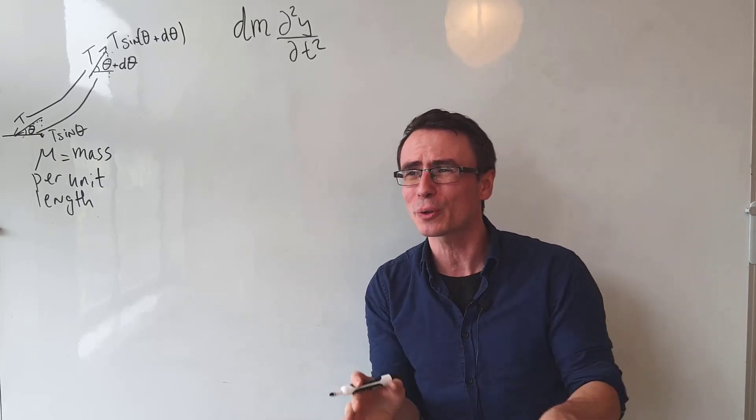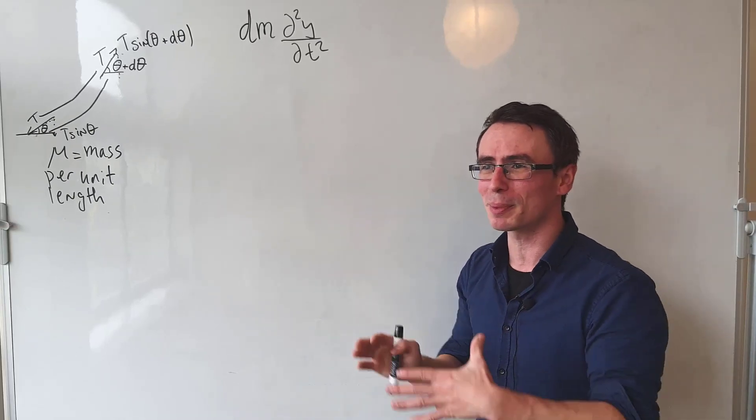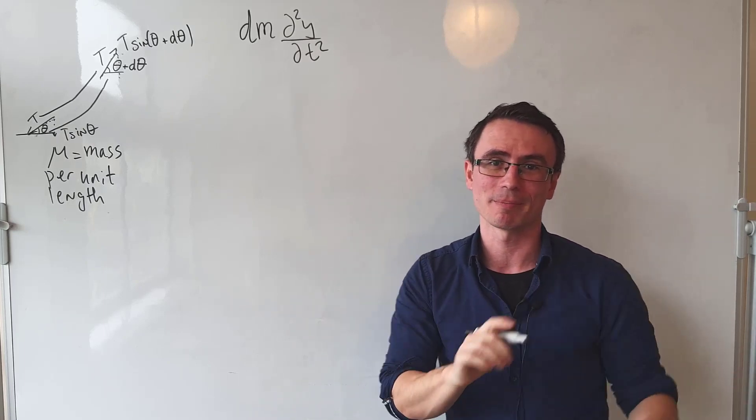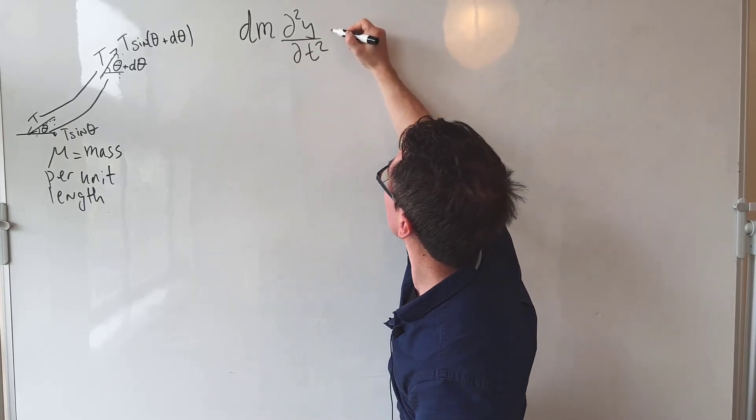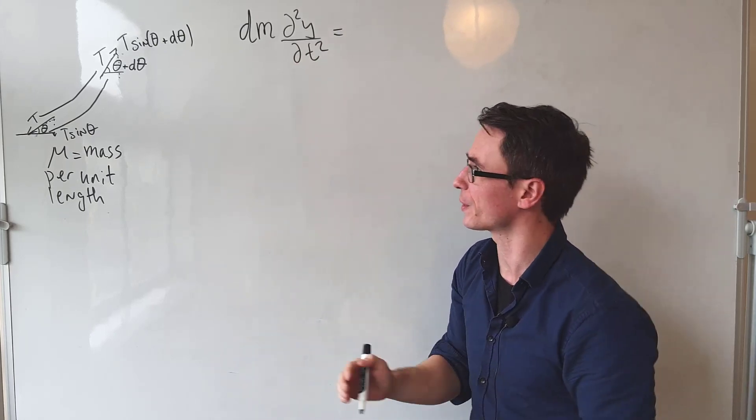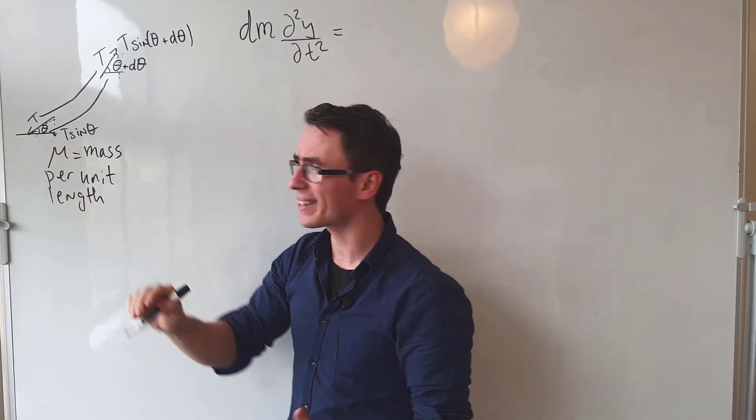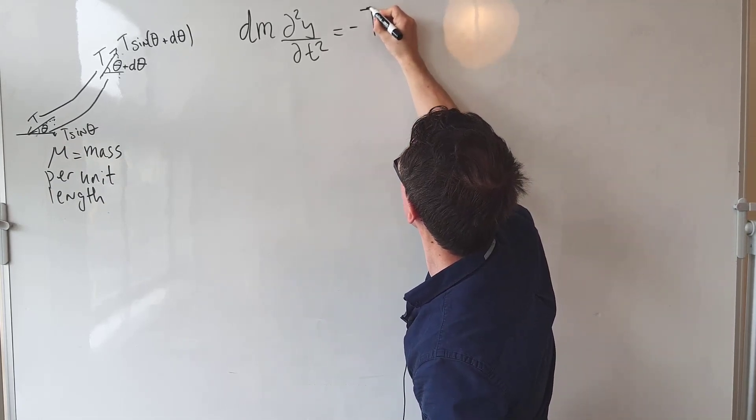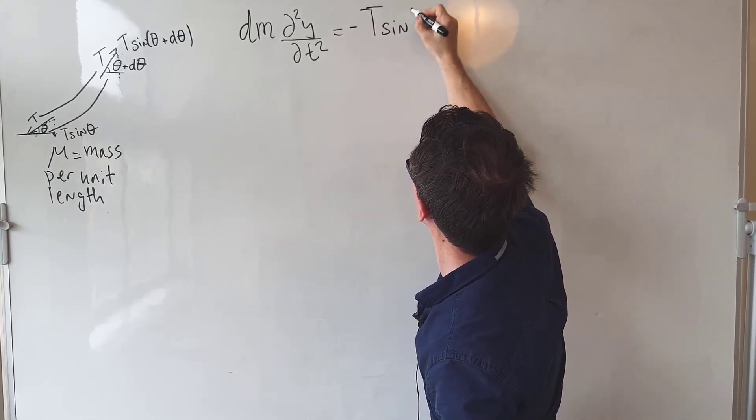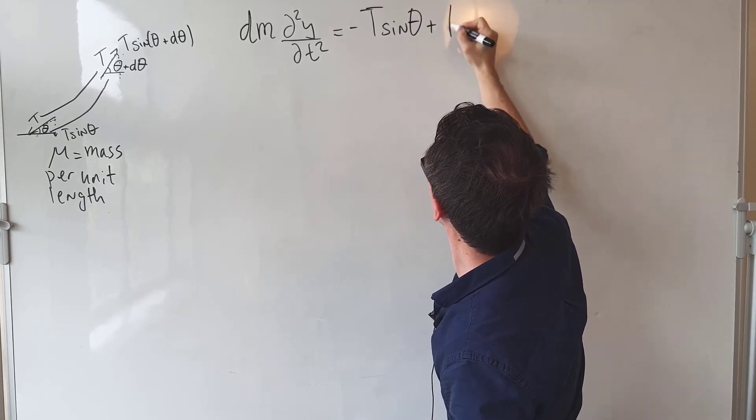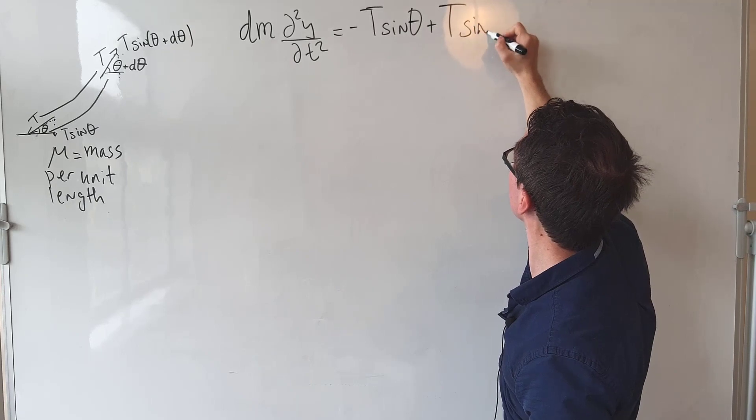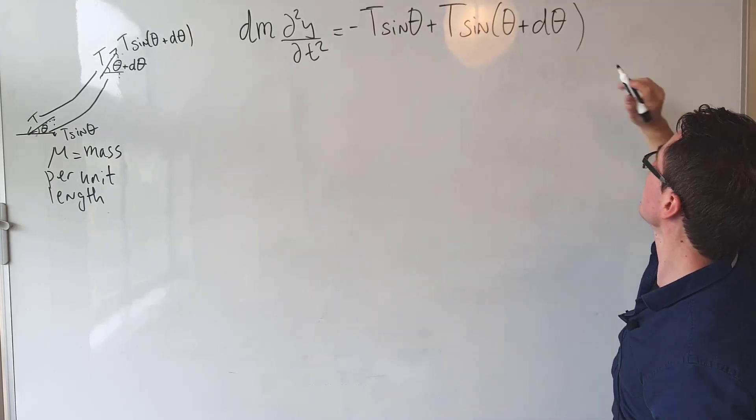If you've never encountered those, do not worry. The reason why we're using them is because the displacement depends both on position and on time. So mass times acceleration will be equal to the sum of all forces. Because this component here is acting downwards, I'm going to say that this is equal to -T sin theta + T. This component is now acting upwards, which is going to be sin of theta plus d theta.